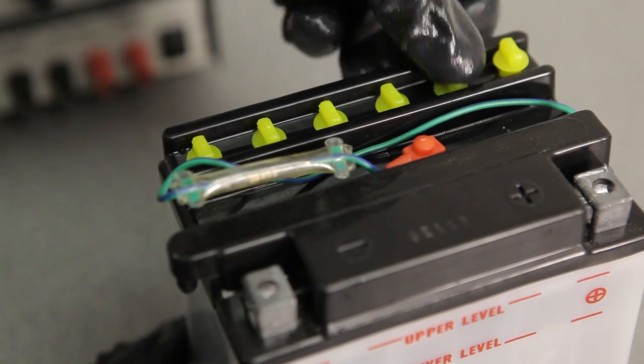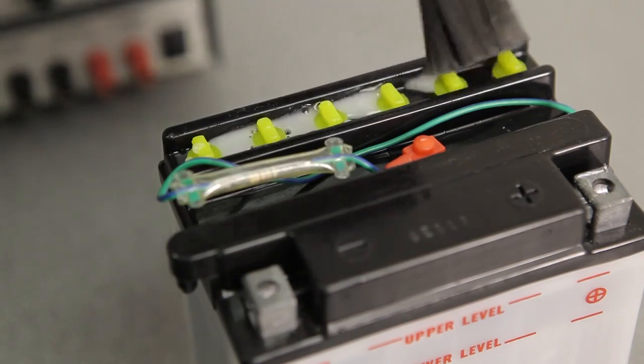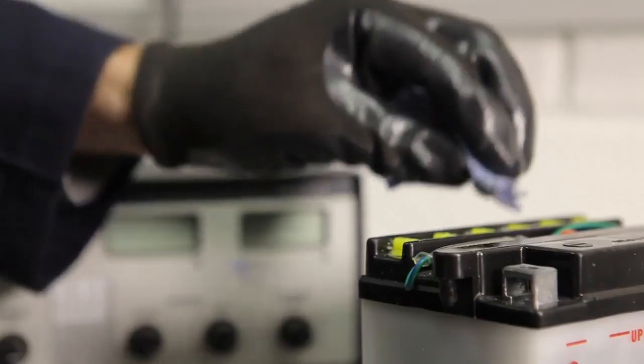Push or screw down the filler caps as appropriate, making sure not to over-tighten them, and clean off any spilled electrolyte with a water and baking soda solution.